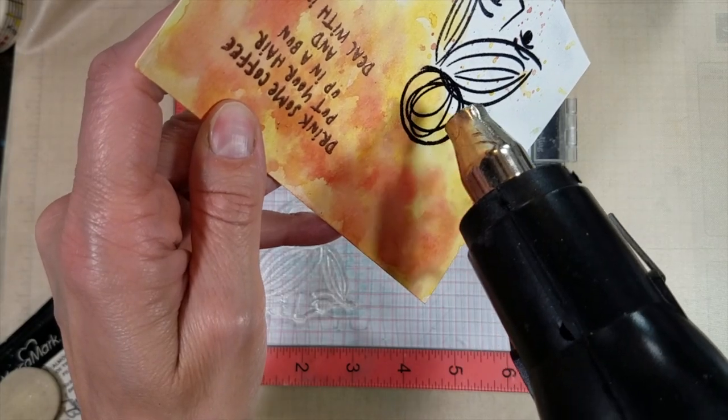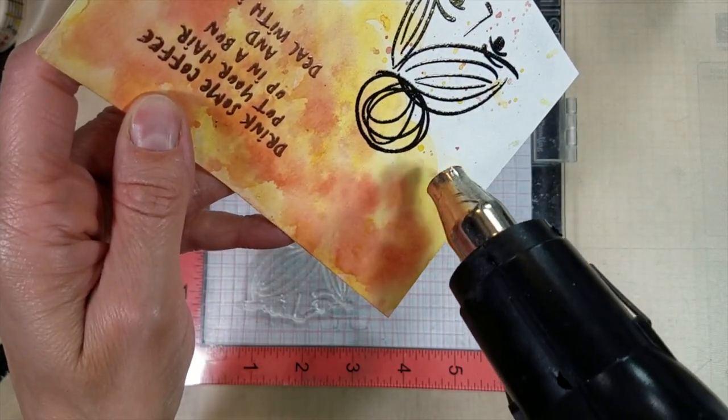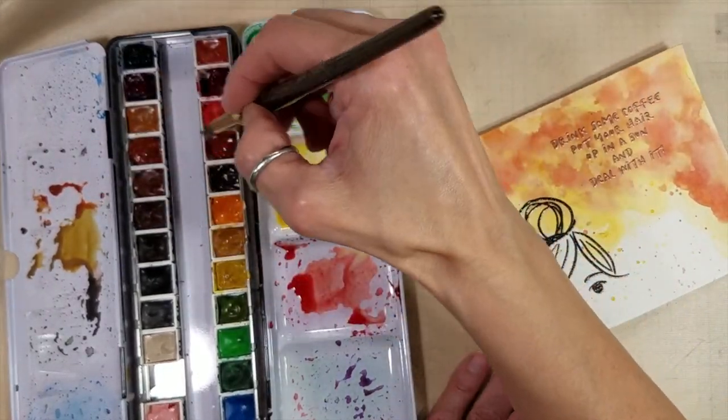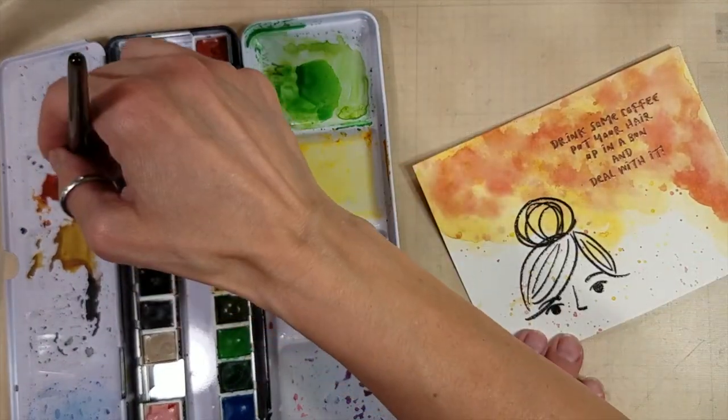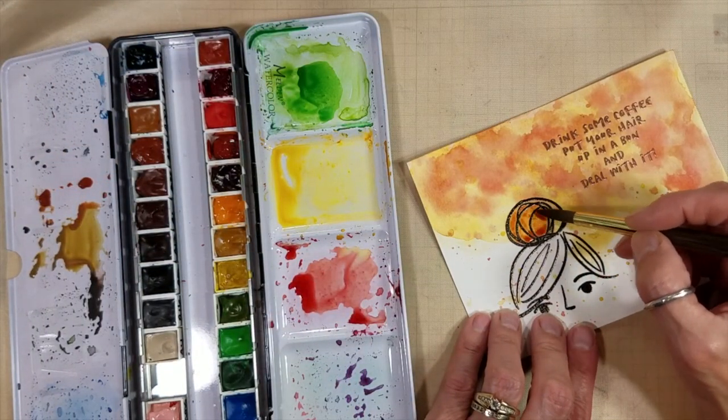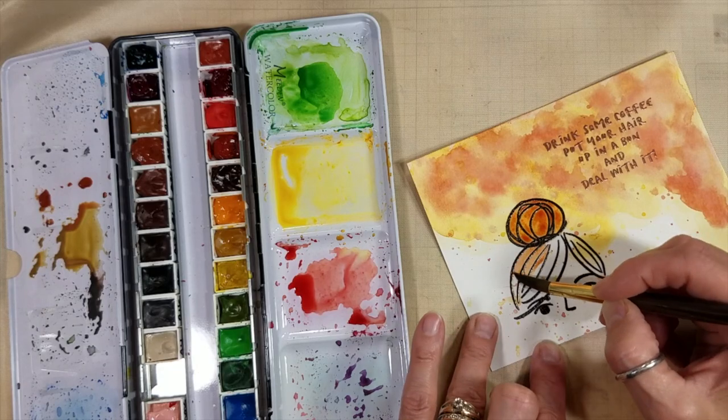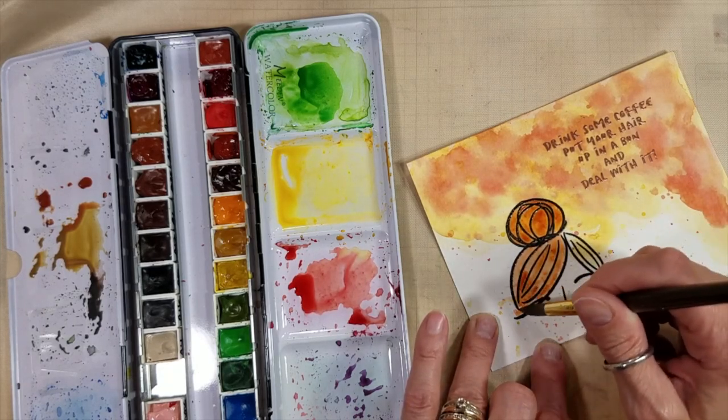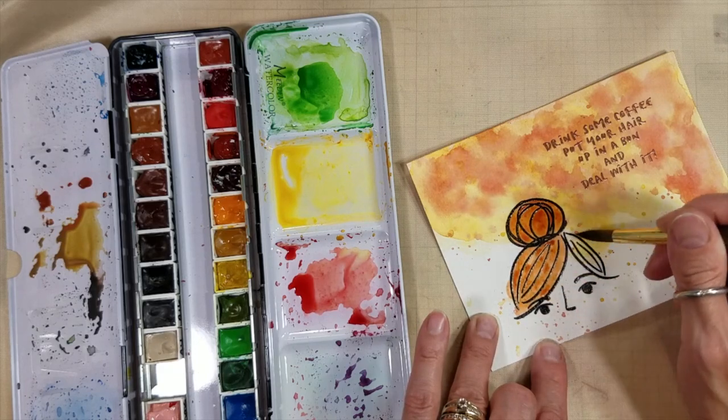I'm using the Night Shift embossing powder from Brutus Monroe. And this one, I believe, is the gold, which is perfect. So what the Night Shift ones are, it's a black embossing powder with like a mica powder of another color in it. So that when you shift it in the light, it changes colors. It's beautiful.